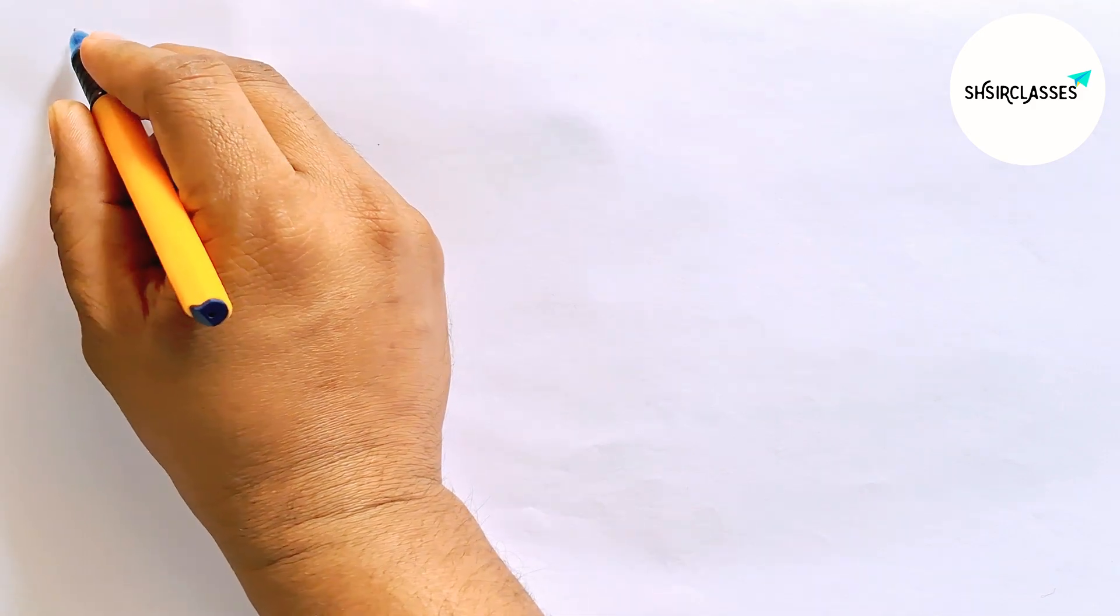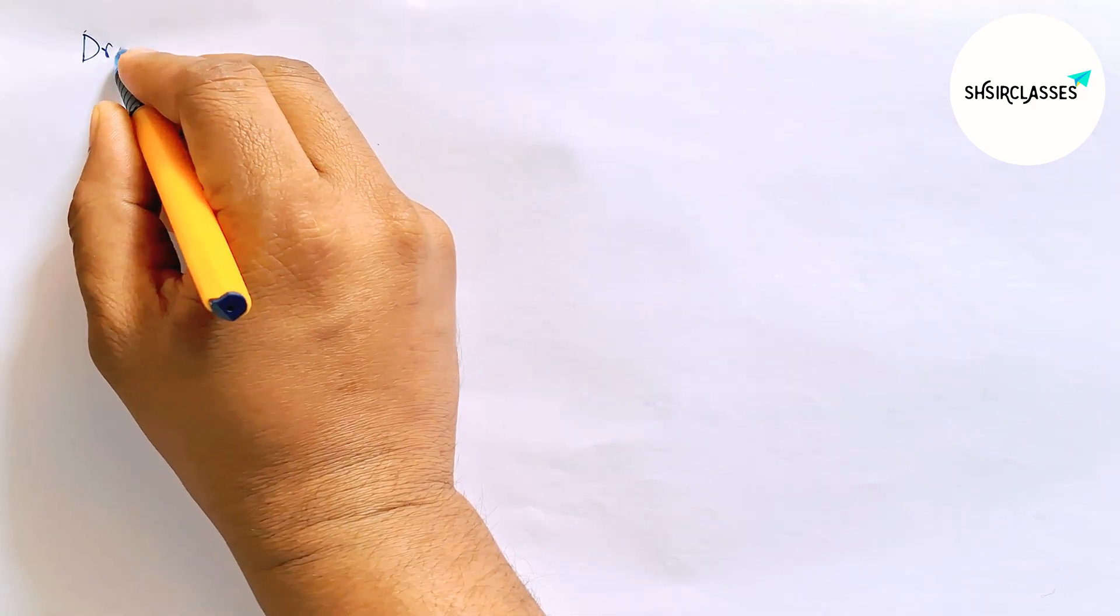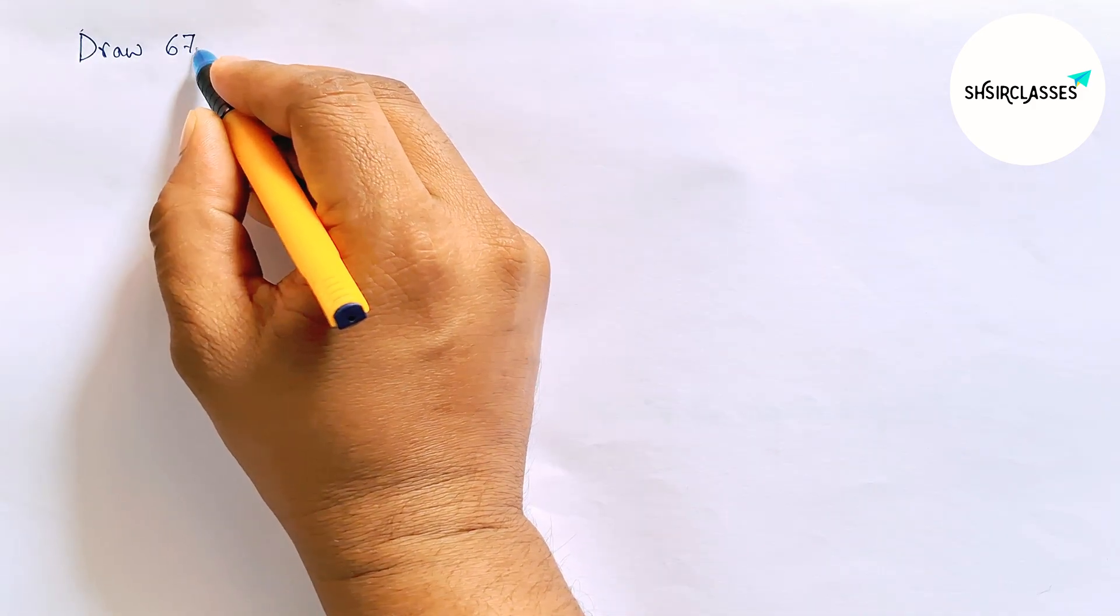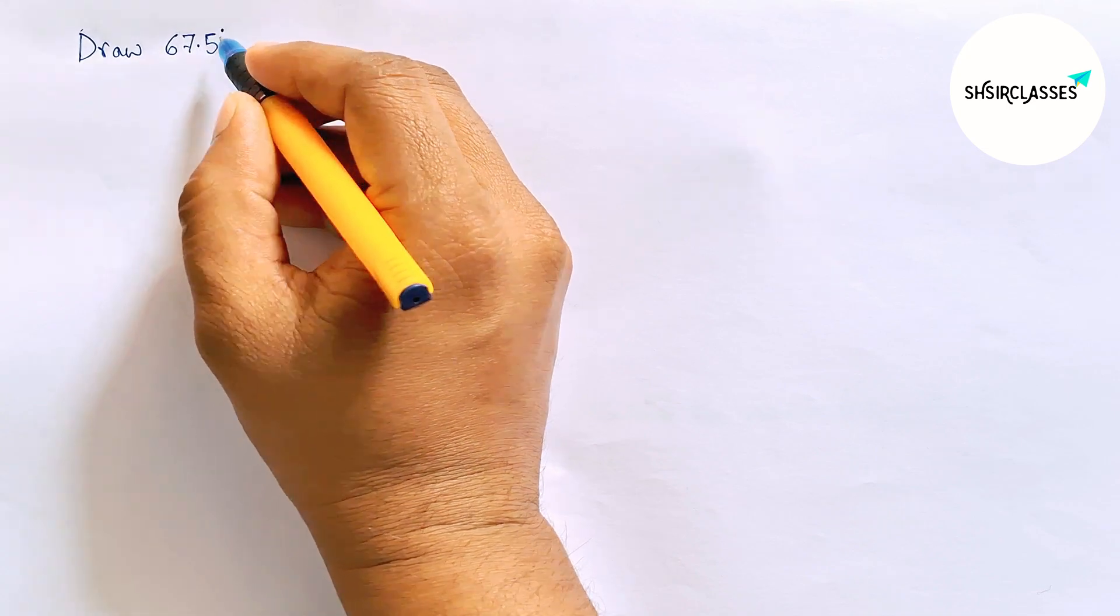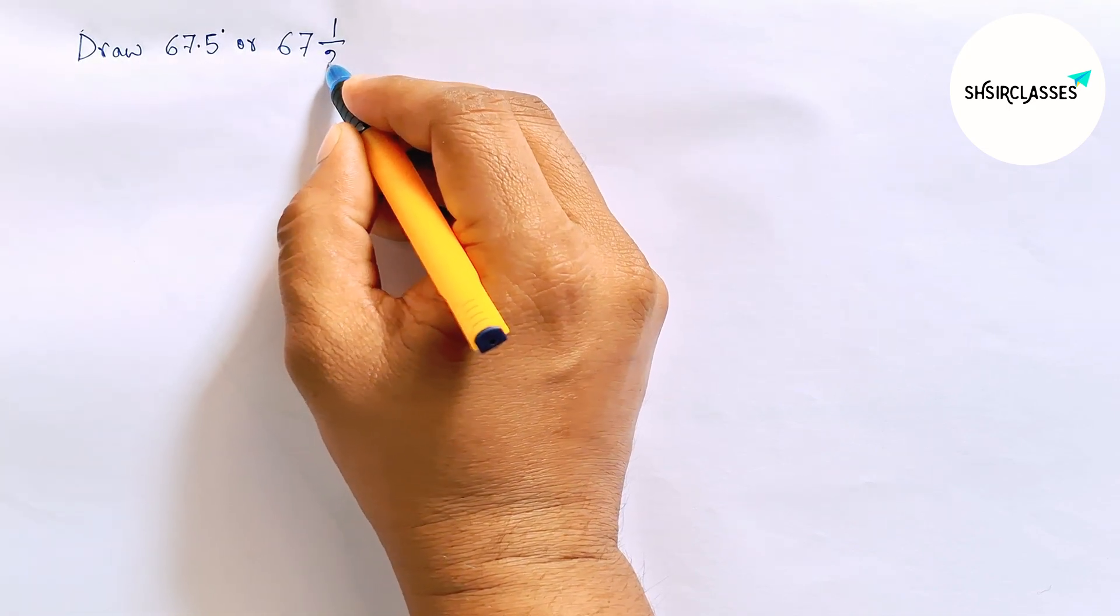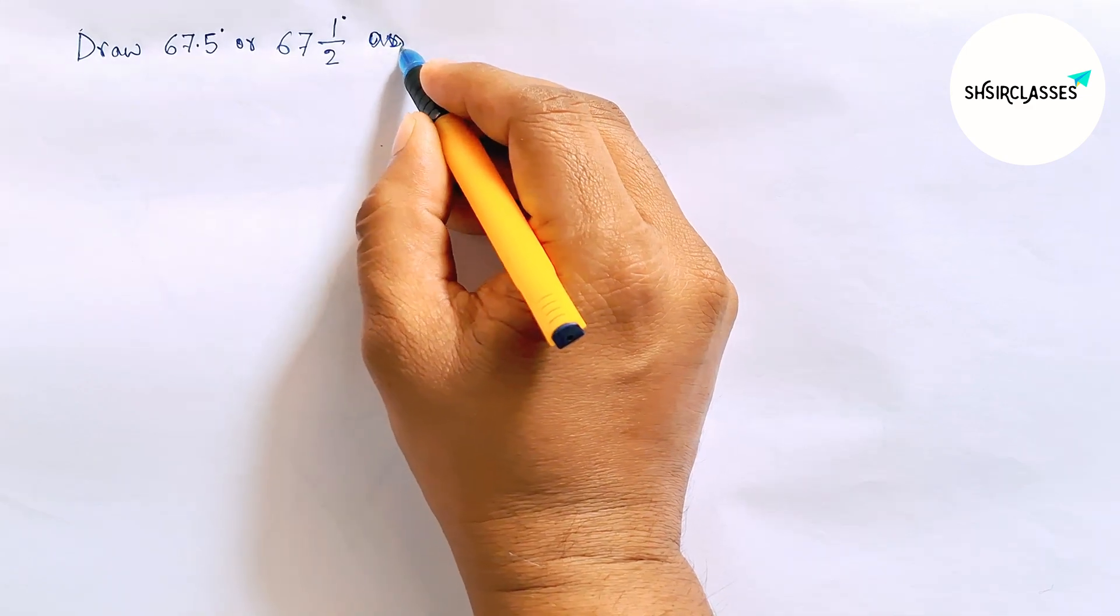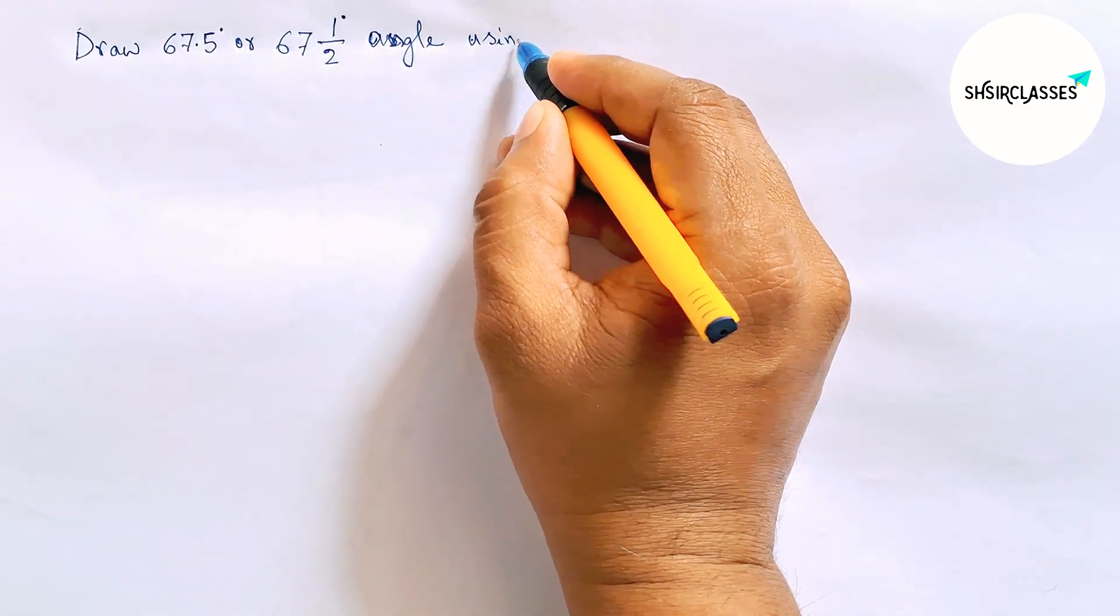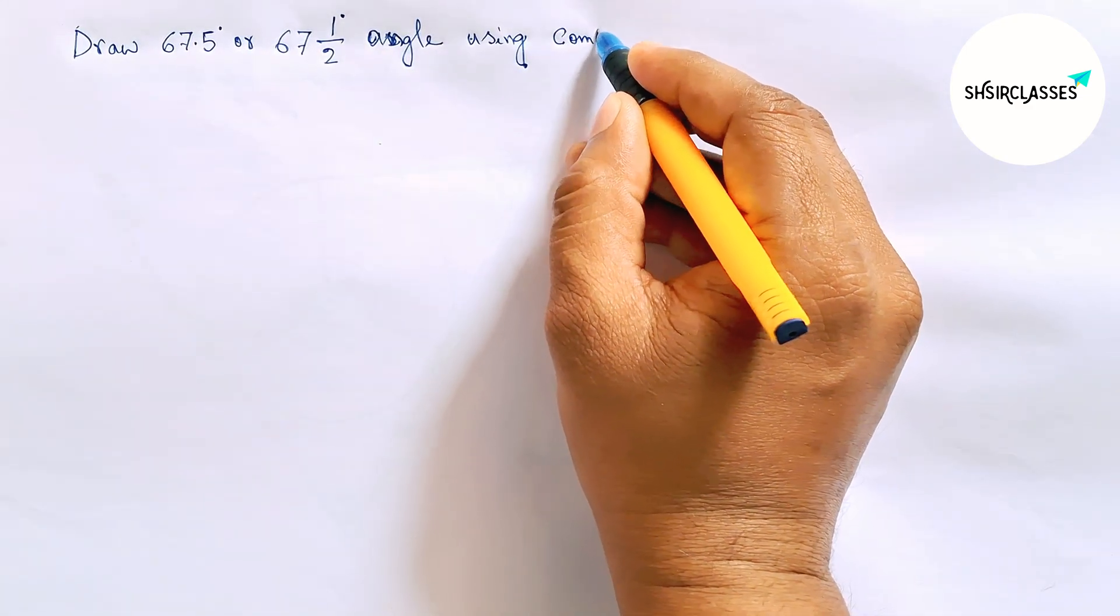Hi everyone, welcome to SISR classes. Today in this video, draw 67.5 degree or 67 and 1/2 degree angle in easy way. So please watch the video till the end. So let's start the video.